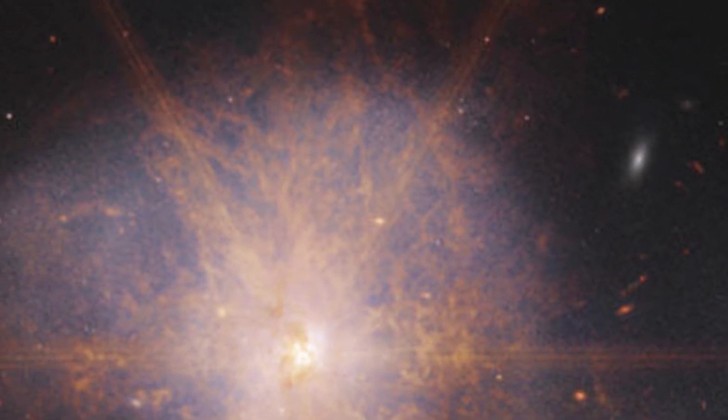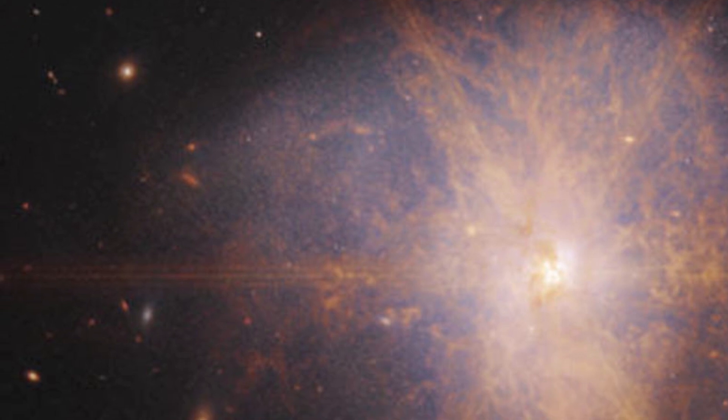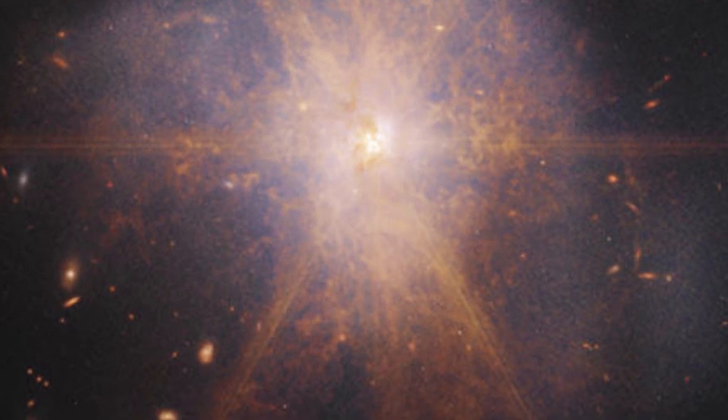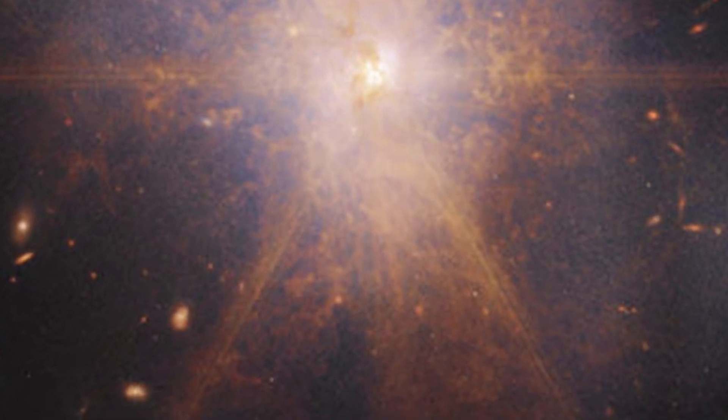This image also shows faint tidal tails extending from the outskirts of the merger, indicating the gravitational pull between the two galaxies. Finally, the reddish and orange streams and filaments represent scattered organic materials in ARP 220.